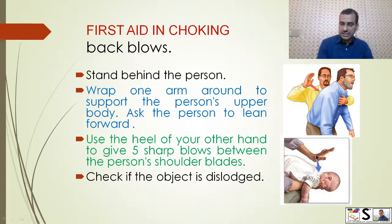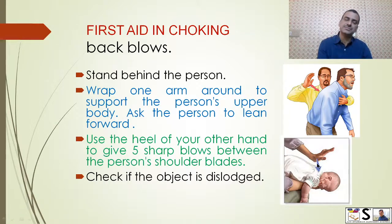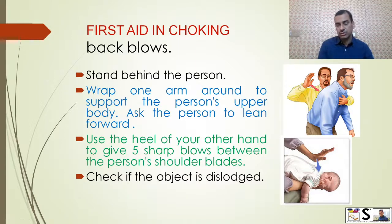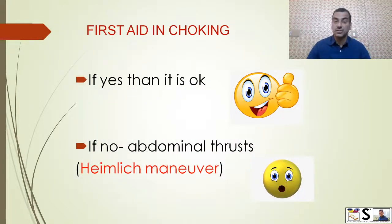In case of children, especially infants, you will sit on a chair, hold the baby face-down like this, and tap on the back with the heel of your hand. After five blows, check whether the object has been dislodged or came out. If yes, then it is okay. But if no, then we will shift to the second activity — the Heimlich maneuver.